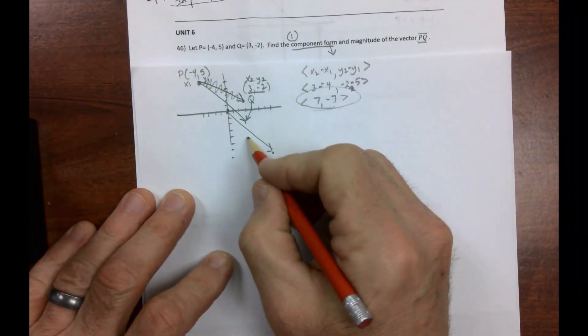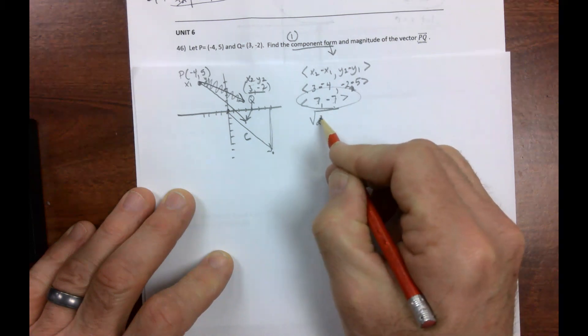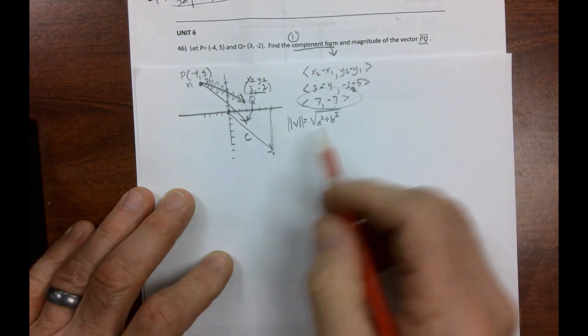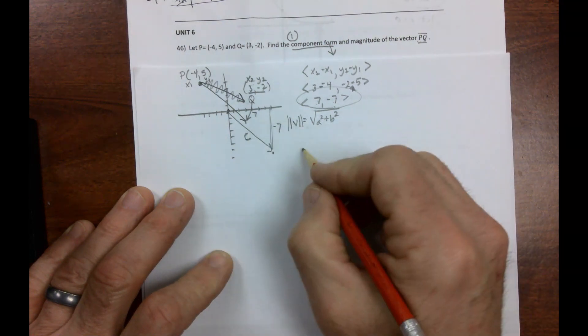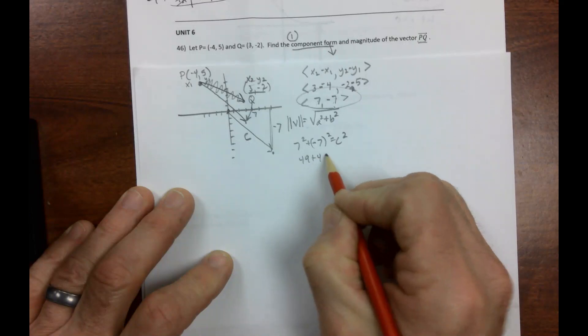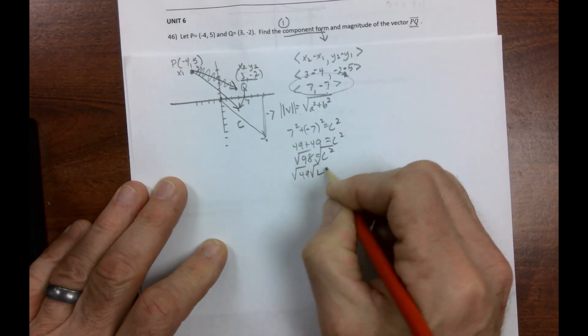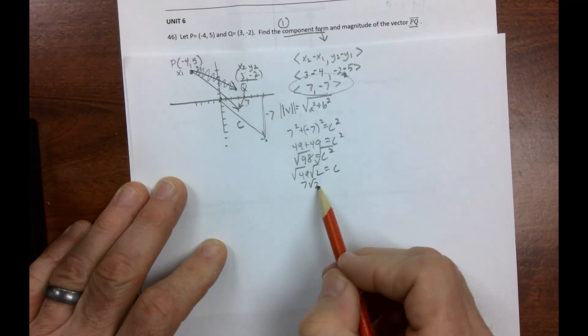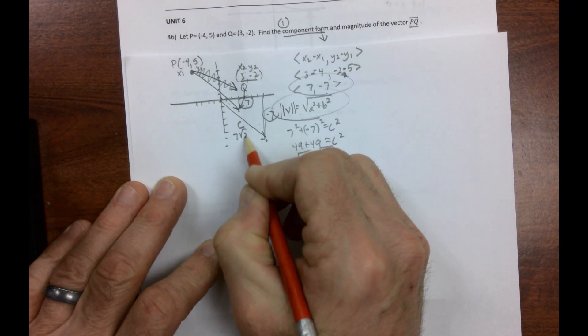What's the magnitude? Magnitude is this length. Now remember, we could just use Pythagorean Theorem. The formula is square root of a squared plus b squared. That's our symbol for magnitude. This is Pythagorean Theorem. So if this is 7 and that's negative 7, you get 7 squared plus negative 7 squared equals c squared. You're going to get 49 plus 49 equals c squared. So you get the square root of 98, which breaks down into 7 root 2. This is a 45, 45, 90 because these two sides are the same.